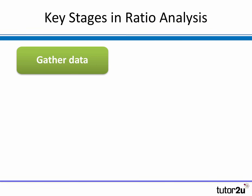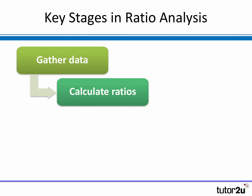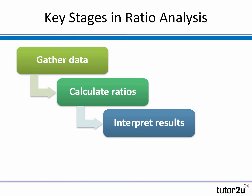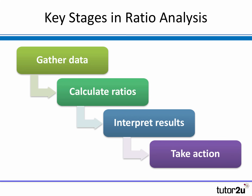Now, in terms of ratio analysis, the key process involved is firstly to gather the data — most of that will be from the financial accounts of a business. You then calculate the ratios. Having calculated the ratios, importantly, you then need to analyse and interpret the results — what is the ratio saying? And finally, and perhaps most importantly, take some action based on it. There is no point calculating a ratio unless, in particular, if it gives you an insight into business performance, you do something about it.